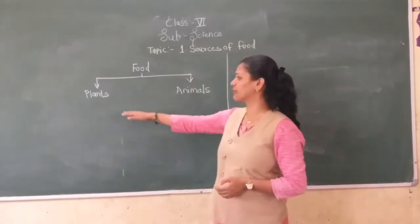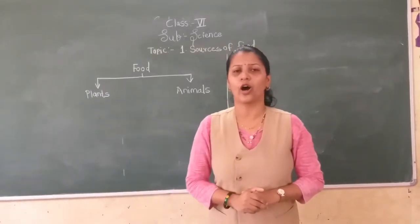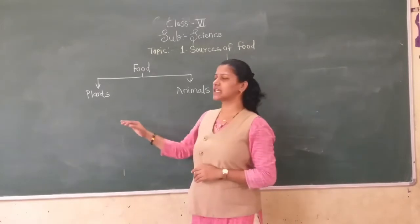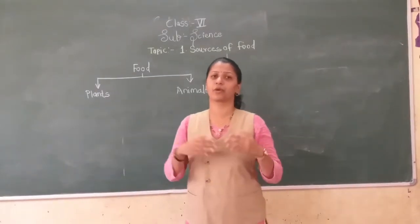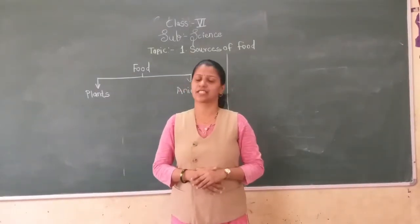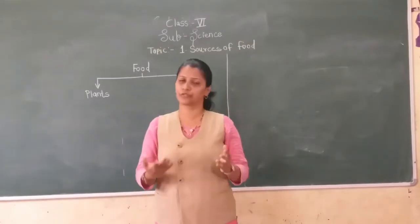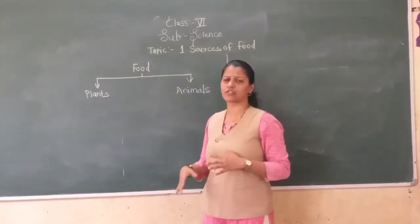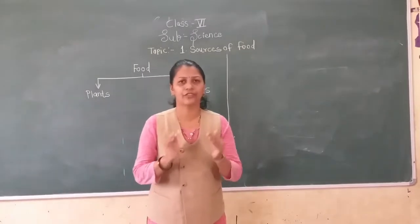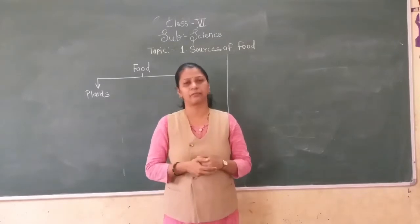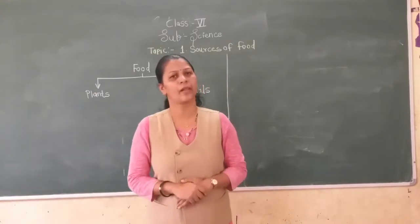We do not get all this food from a single plant, or from a single part of the plant. We get all these food items from the various parts of the plant — such as root, stem, leaf, flower, fruit. The part of the plant which can be eaten is called an edible part.